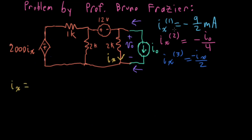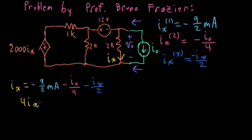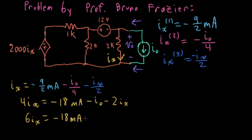Now I can find IX by summing the contributions: IX equals IX1 plus IX2 plus IX3, which is minus 9 over 2 milliamp, minus I-naught over 4, minus IX over 2. Multiplying through by 4: 4 IX equals minus 18 milliamp, minus I-naught, minus 2 IX. Moving the 2 IX over gives 6 IX equals minus 18 milliamp minus I-naught. So IX equals minus 3 milliamp minus I-naught over 6.